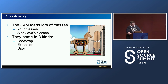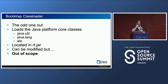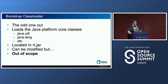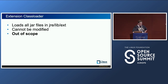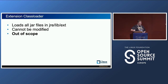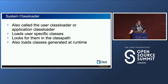The Bootstrap Class Loader loads the Java core platform classes themselves — java.util, java.lang, and so on — from rt.jar. The Extension Class Loader loads files from jre/lib/ext. The System Class Loader loads classes from the classpath you've provided into the Java Virtual Machine for you to use, and it also loads classes that you generate at runtime.